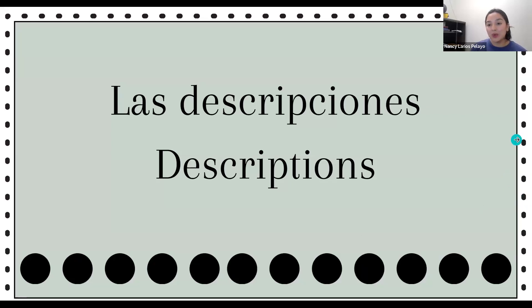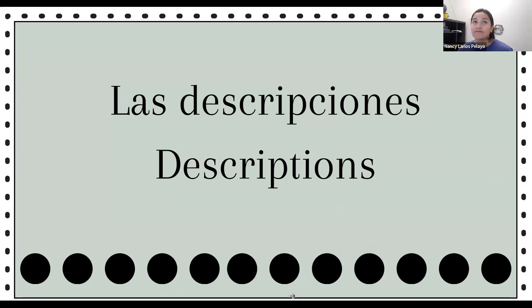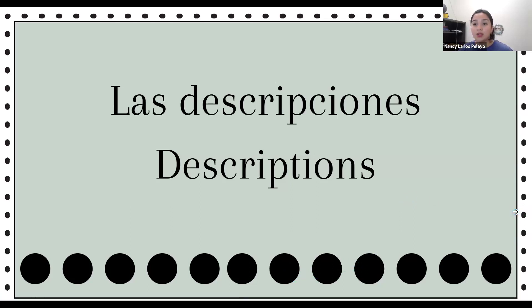Before we move on to our next slide, I want you to think of two adjectives to describe yourself — one physical description and one personality description. Think about it. How would you describe yourself? Would you describe someone who's shy, really outgoing, creative, athletic? Maybe you are tall, short, have long hair or short hair. Think about those types of descriptions — this can be in English. Think of two descriptions: a physical and a personality description.